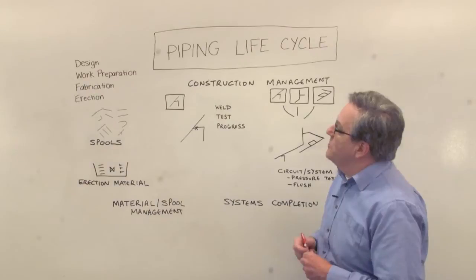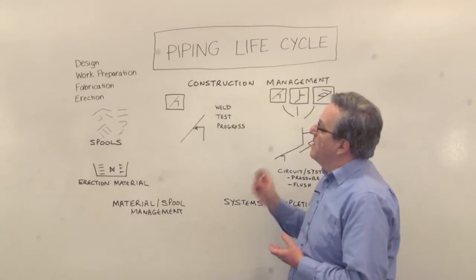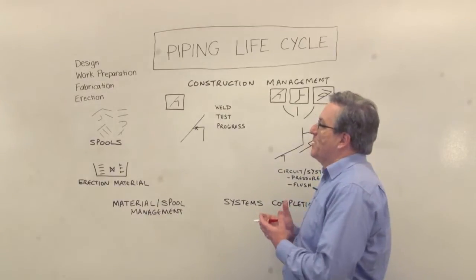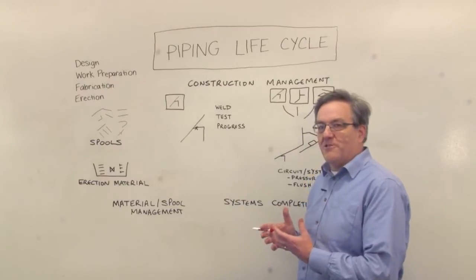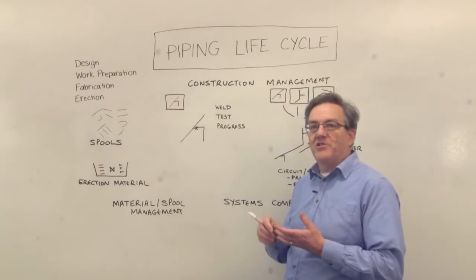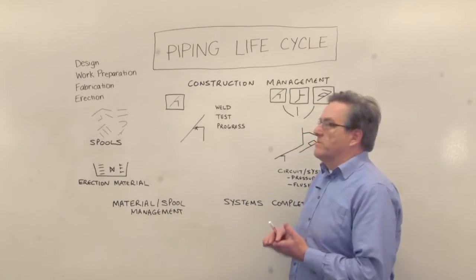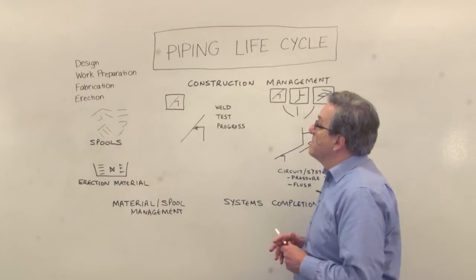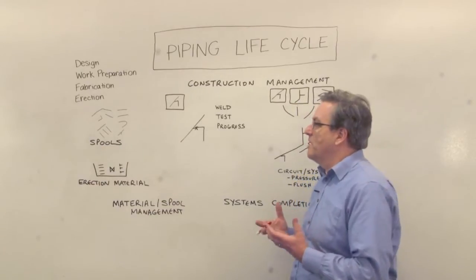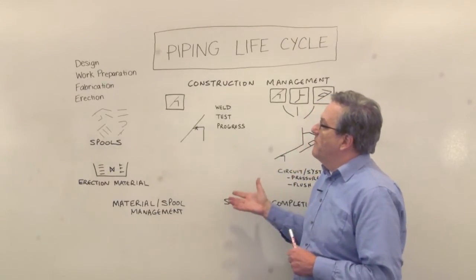We've already covered the stages of what happens in design, work preparation, and fabrication. We've seen the important concept that the data that originated in the 3D design model has flowed through the whole system. We've tried to avoid re-entering, copying, or transcribing information — we've tried to use the data as it is and to add to it, because that's going to minimize error and produce a better quality result. We've seen how the piping data for things like temperatures, pressures, and flow has driven the requirements for welding.